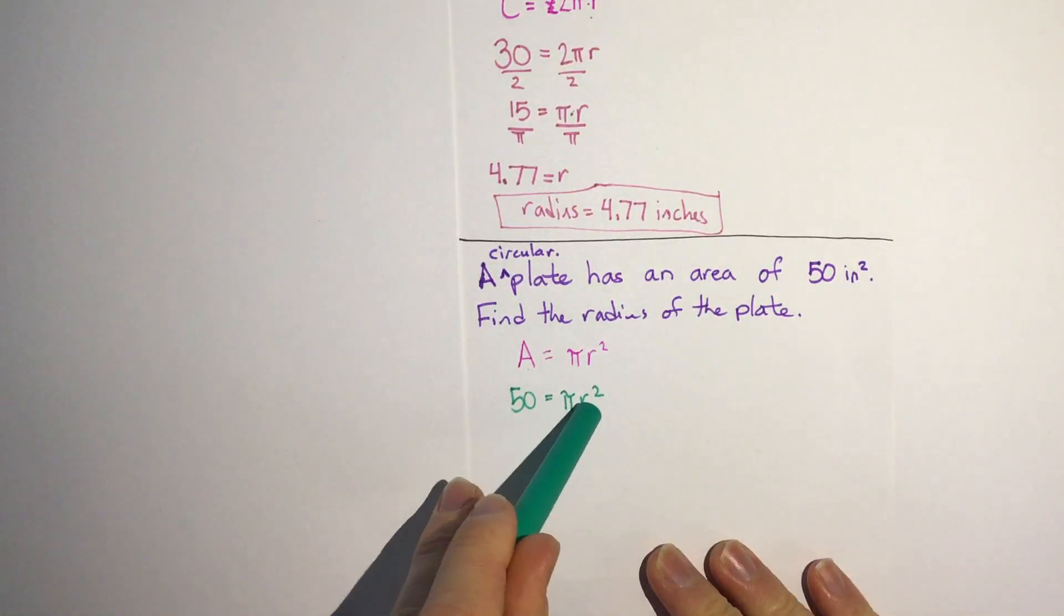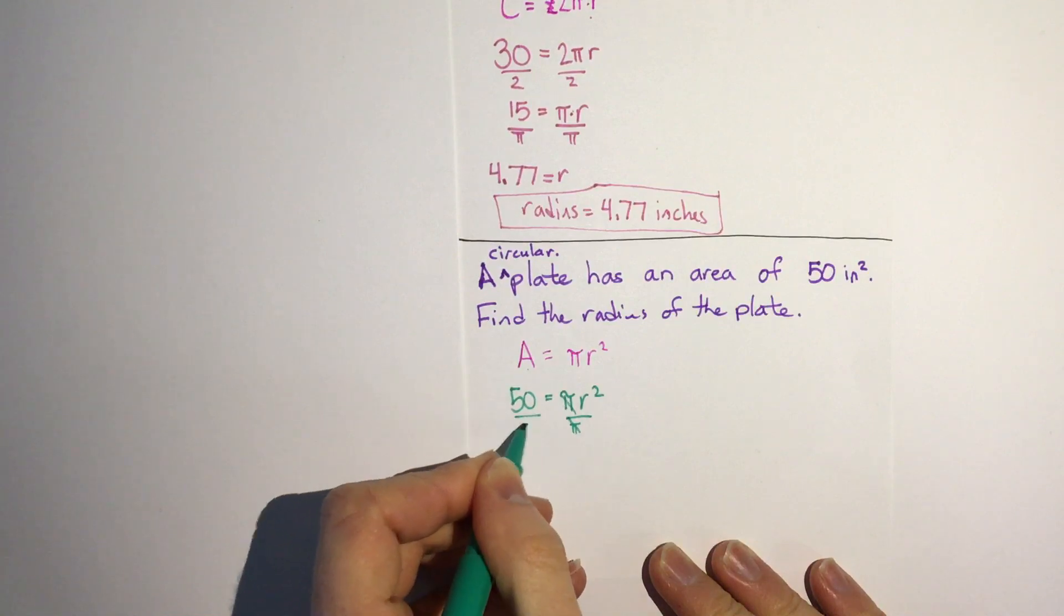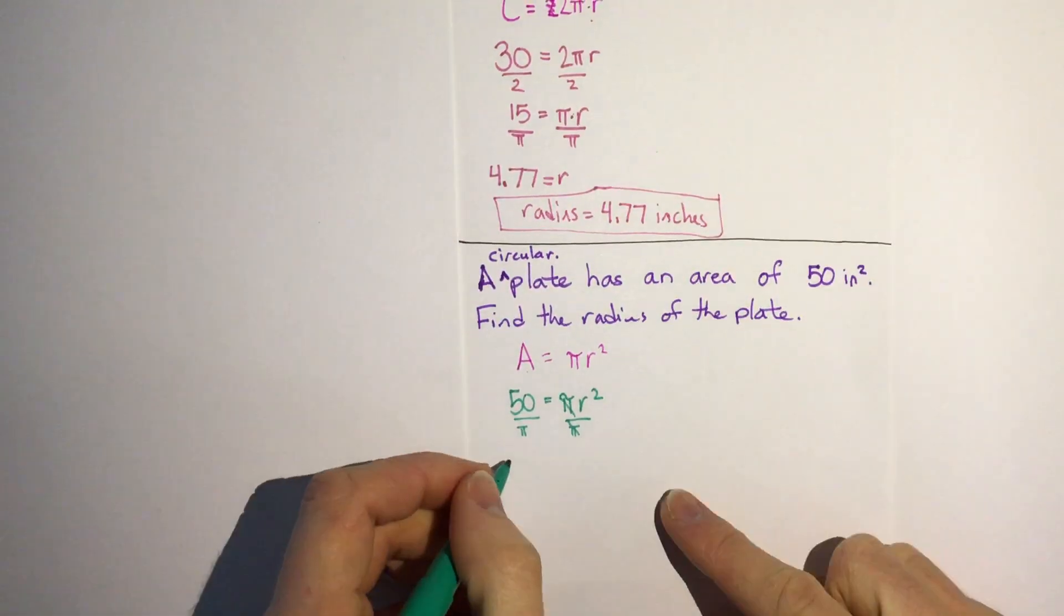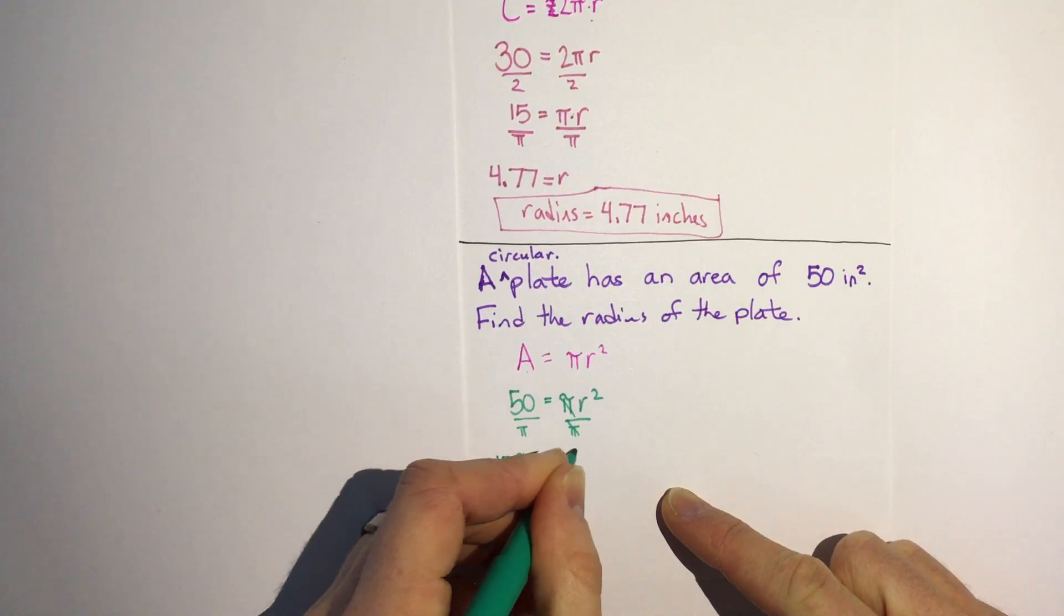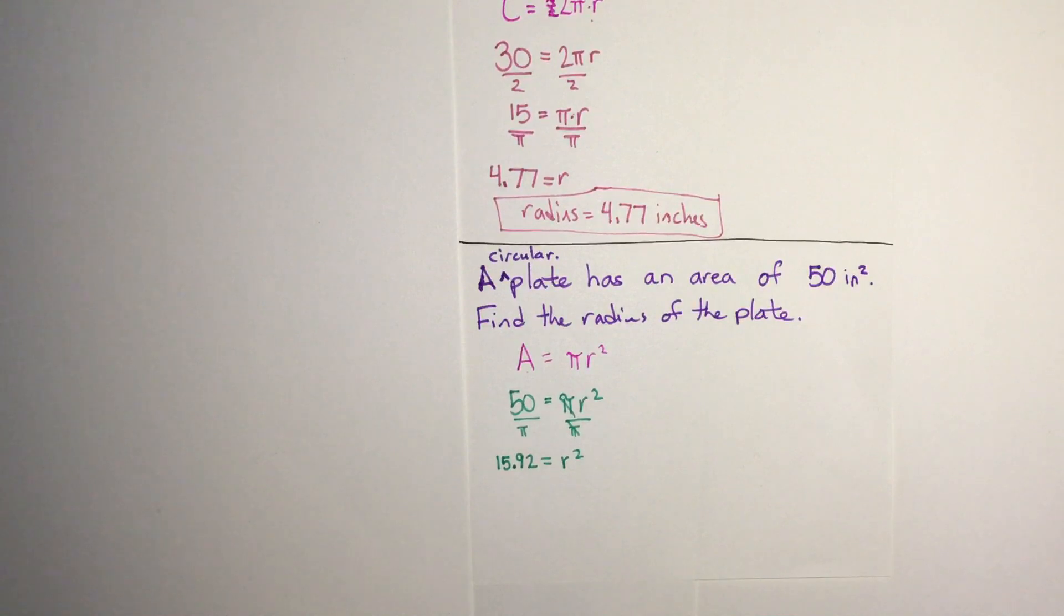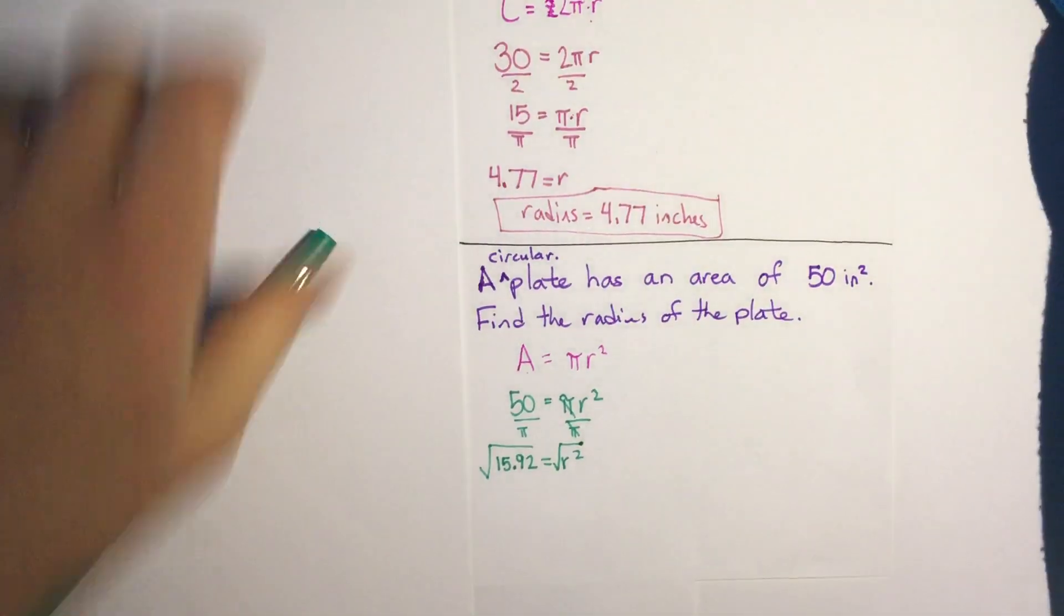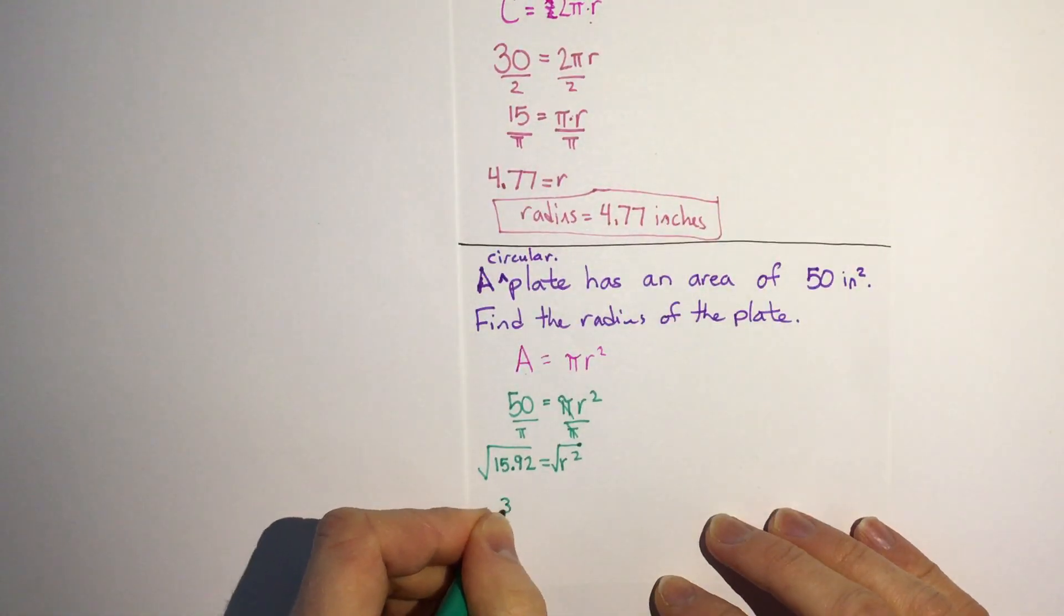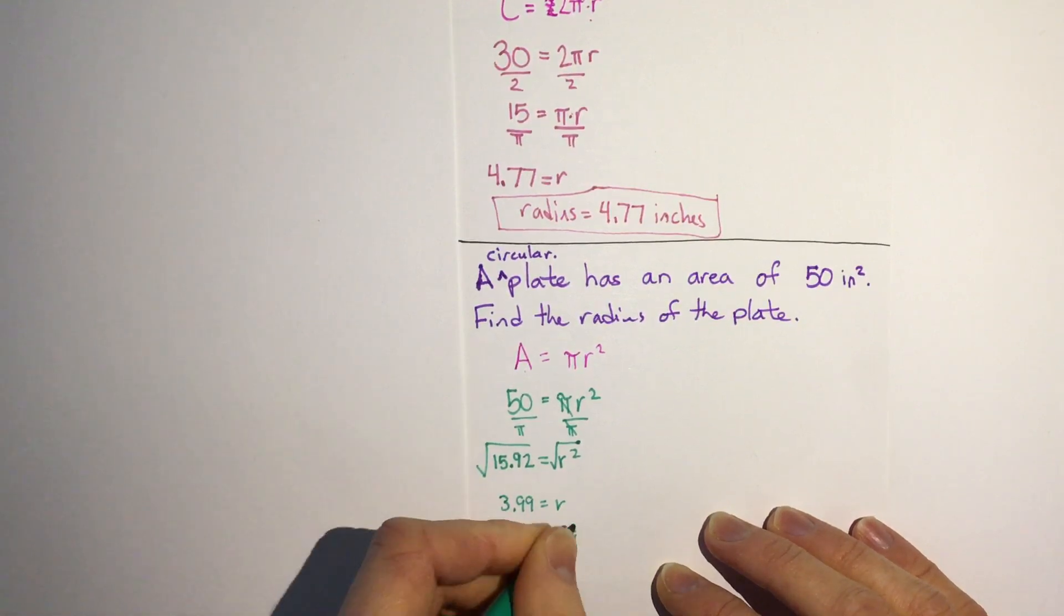And π times some radius squared is going to equal 50, so we have to get rid of this π, so we divide by π. And figure out what that is - 50 divided by π is 15.92, equals the radius squared. Now remember, to get rid of a square what we can do is square root. So we find the square root of 15.92 and we find that we get 3.99. So our radius is 3.99 inches.